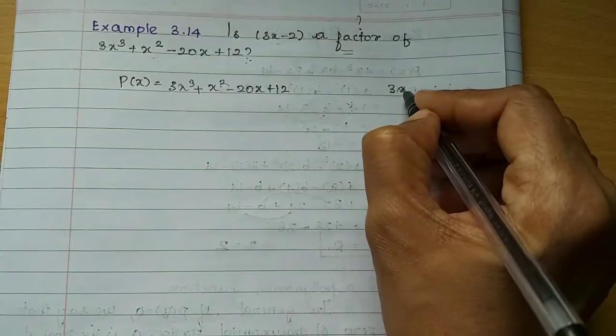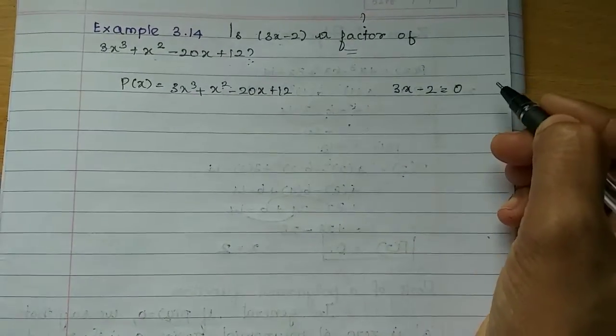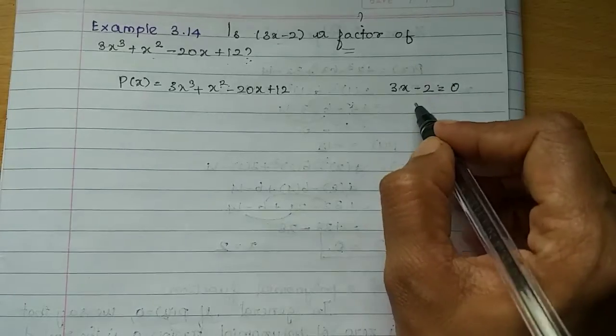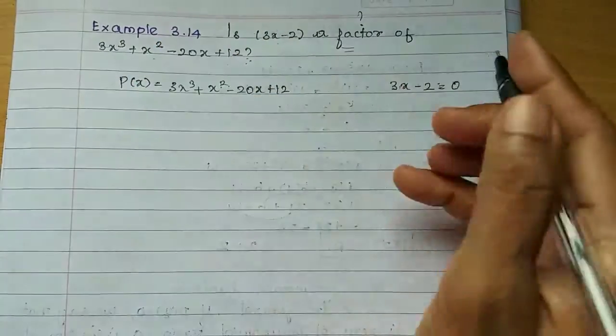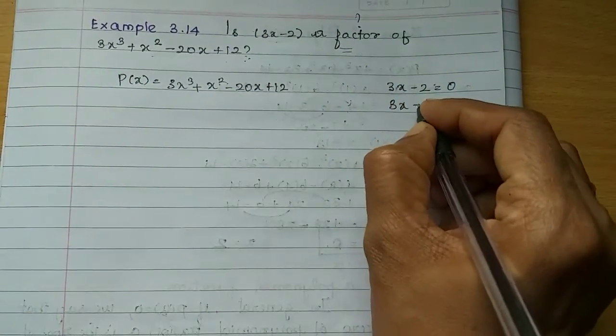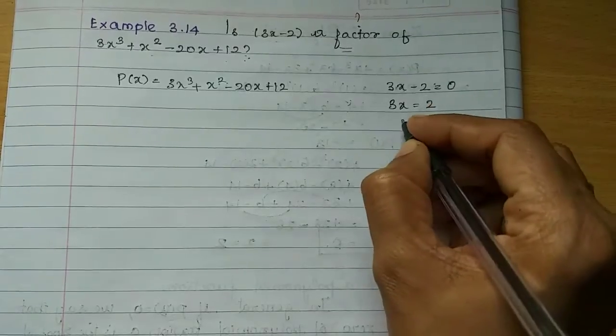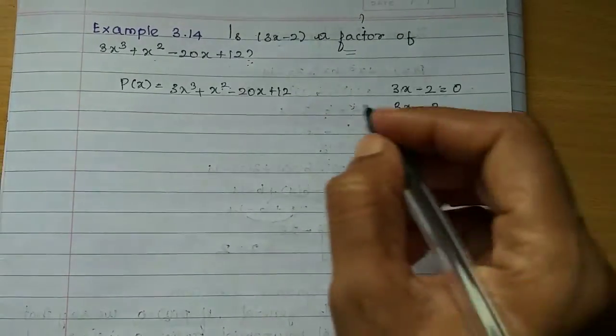If you have a factor in this polynomial, it will be equal to zero. If we have a value of x, we can substitute that. So 3x is equal to minus 2, add 2 to both sides, so x is equal to 2 by 3.